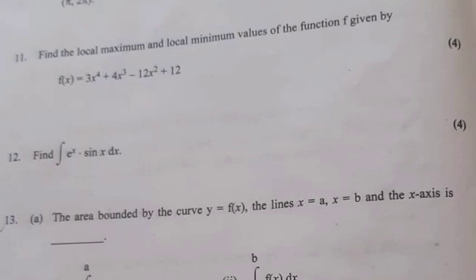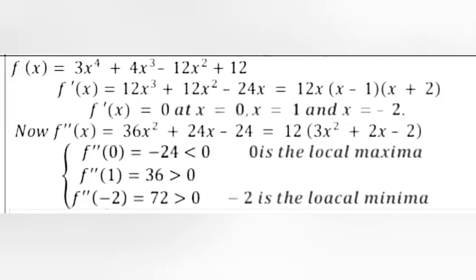Question 11: Find the local maxima and local minimum values of the function f given by f(x) = 3x⁴ + 4x³ - 12x² + 12. Answer: f'(x) = 12x³ + 12x² - 24x = 12x(x - 1)(x + 2). f'(x) = 0 at x = 0, x = 1, and x = -2.